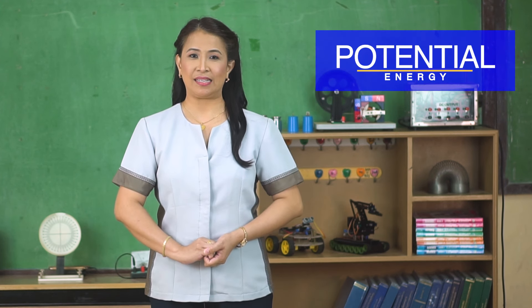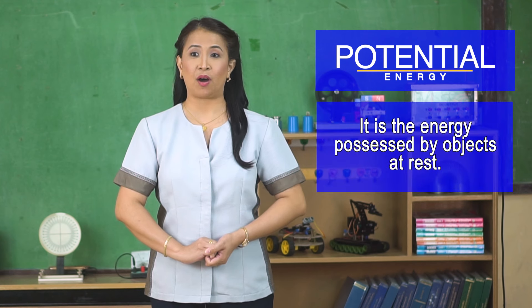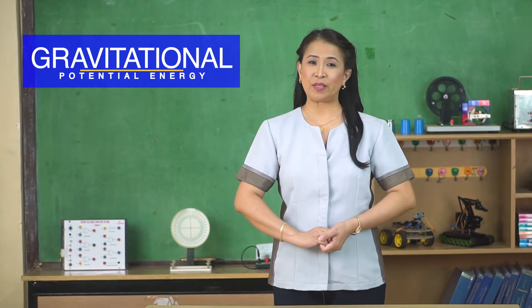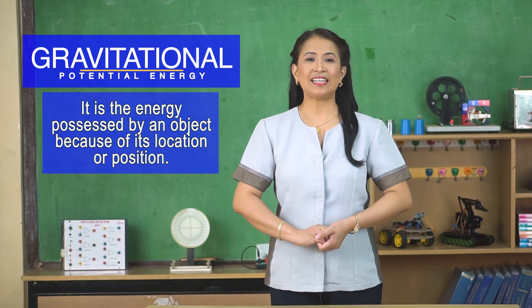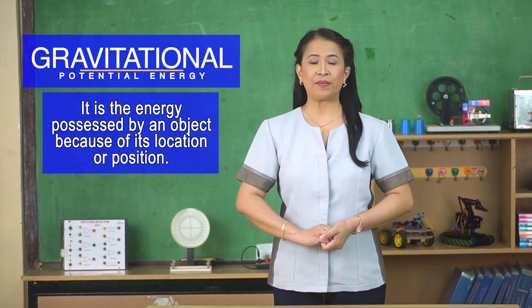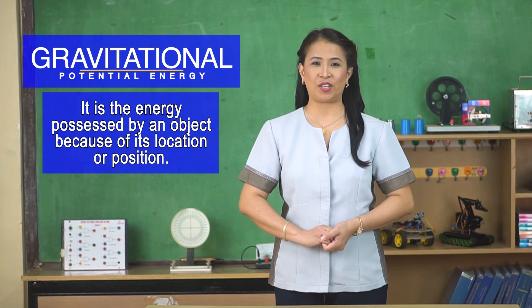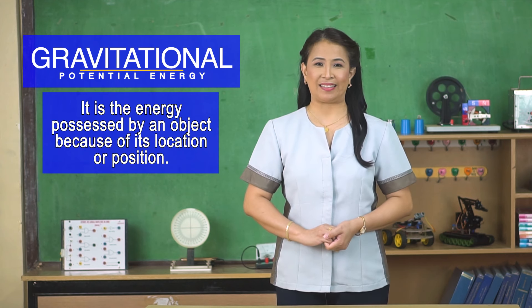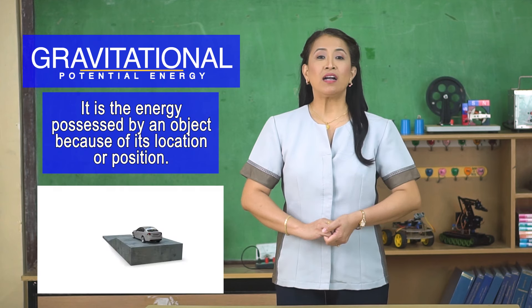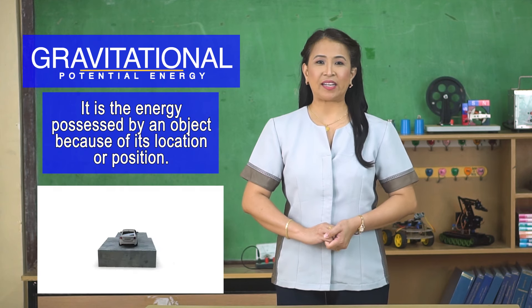There are two kinds of mechanical energy. Potential energy is the energy possessed by objects at rest. It has two kinds. Gravitational potential energy is the energy possessed by an object because of its location or position. For example, a book on top of a table, or a car parked on a ramp.